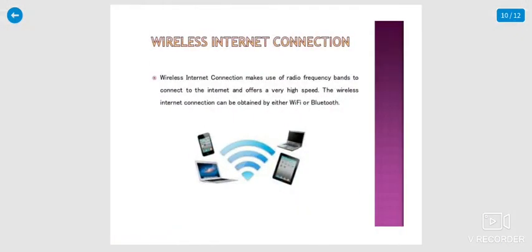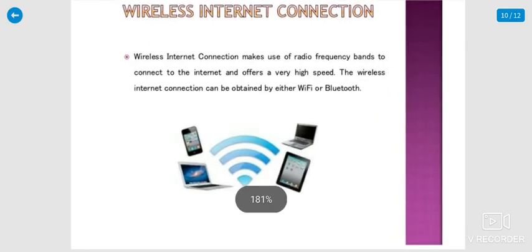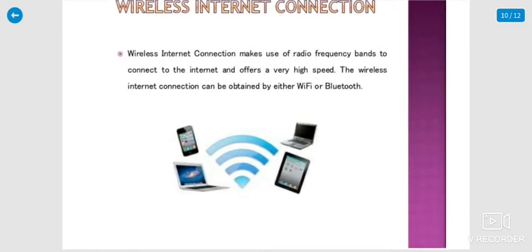And wireless internet connection is going into this new world. Every wireless connection makes use of radio frequency bands to connect to the internet and offers very high speed. The wireless internet connection can be obtained by either Wi-Fi or Bluetooth. Almost all kinds of Wi-Fi internet connections are only for Wi-Fi connections. You can connect to television, mobile, tablet, laptop, etc.